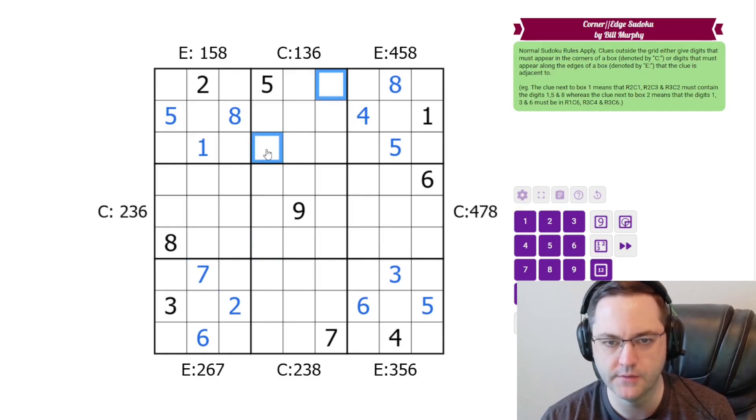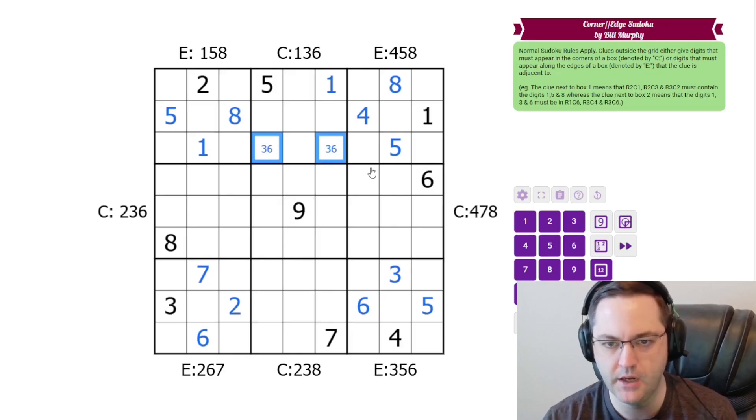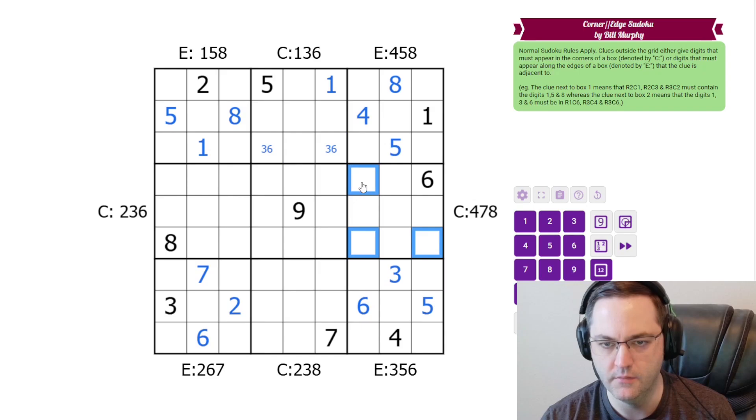We need 1, 3, and 6 here. We have a 1. So that's got to be 1. And we're going to be left with a 3, 6 pair, which we can't resolve yet. 4, 7, 8 here. The 4 has to go in that cell.